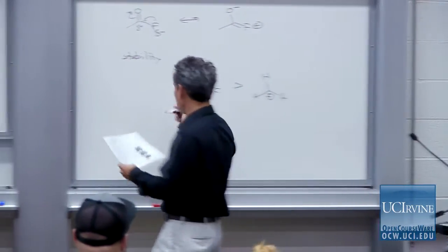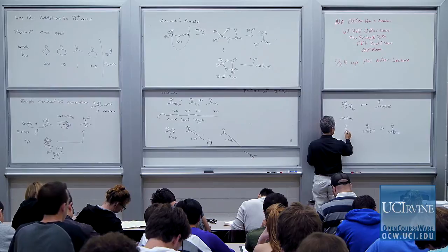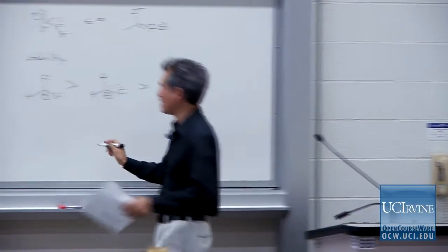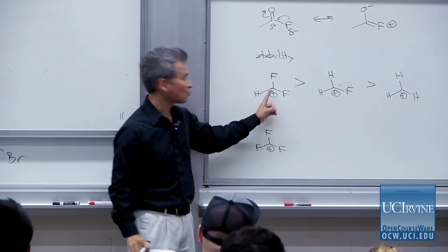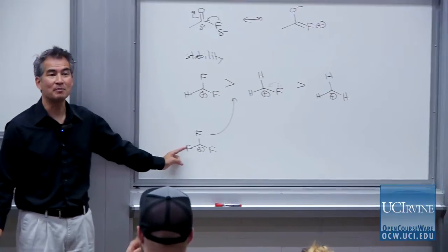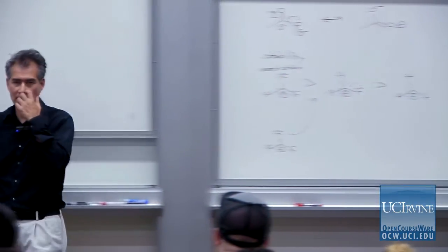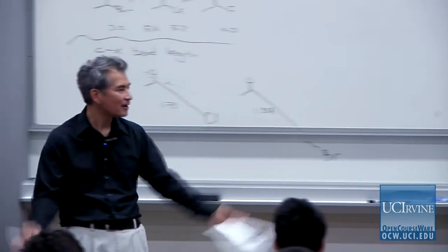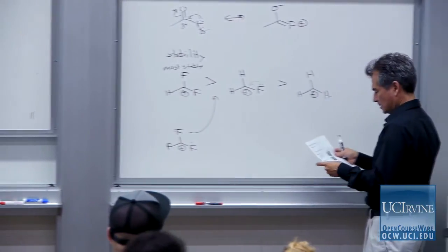If you put two fluorines on a carbocation, it's even more stable. If you put on three fluorines, the third doesn't help — you just get the electronegativity effect. The way to think about it is there's nowhere left for a third fluorine to donate. So of this series, the difluoro compound is the most stable, and the trifluoro compound falls somewhere in between. Remember: fluorine is electronegative, yes, but the lone pairs on fluorine can donate into empty orbitals — and that donation can dominate.